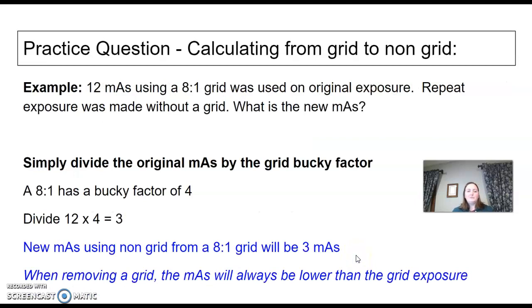Grid to non-grid is the reverse. We're using 12 mAs with the 8 to 1, and now we're going to repeat without a grid. What's the new mAs? All you do is divide this time. An 8 to 1 has a bucky factor of 4. You are simply going to divide 12 mAs by the factor of 4, and that gives me a 3. If I'm going from 12 mAs with a grid to non-grid, my number is going to drop, because it's going to be less without a grid, so I'm going to use 3.